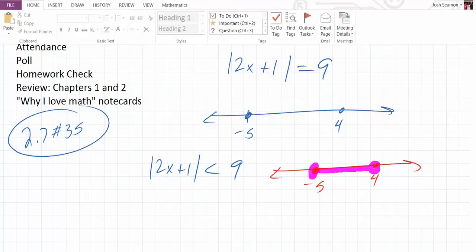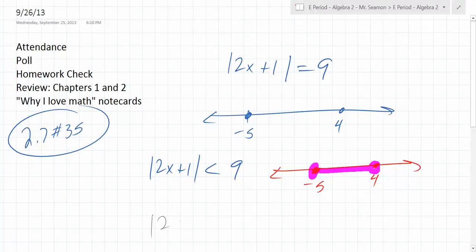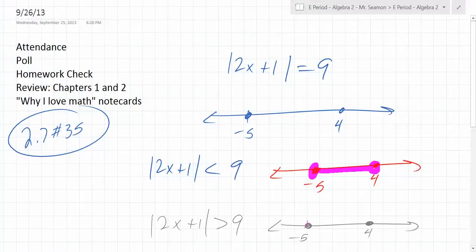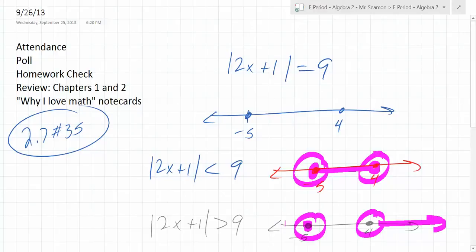So what about, though, what happens if you change it to, as they ask you, 2x plus 1 is greater than 9? You have negative 5 and 4. Which way do you shade now? Out. Is it closed or open? It's open. These should be open. So they're open dots. And where do they go? To the outside.